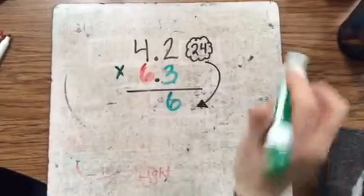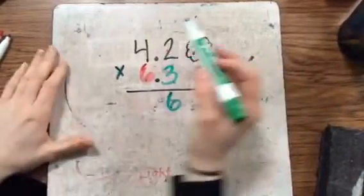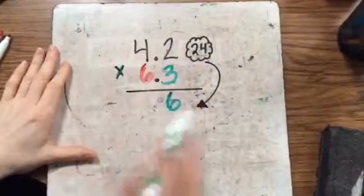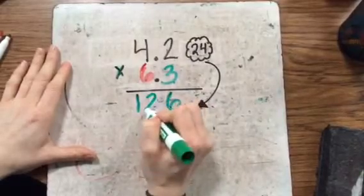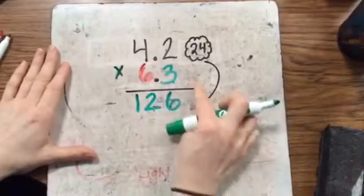3 times 4 is 12. Since there's no other numbers to multiply the 3 by, I'm going to go ahead and put the whole product underneath the product bar.